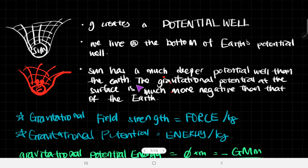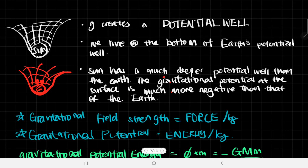The sun has a much deeper potential well than the Earth because it has more mass. The gravitational potential at the surface of the sun is much more negative than at the surface of the Earth, because obviously the well is not as deep. The deeper you go into the well, the more negative the potential becomes.